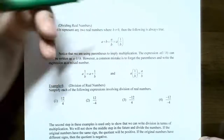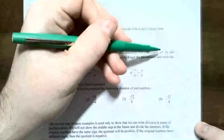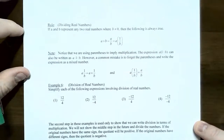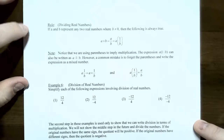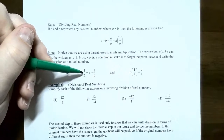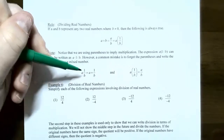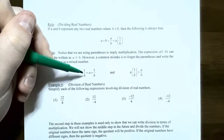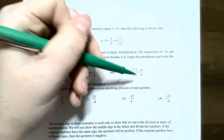One thing to be careful about with notation: when you see A times (1 over B) with parentheses, that's multiplication. But mixed numbers, like 2 and 1 third, are written without parentheses and mean 2 plus 1 third — not 2 times 1 third. If parentheses are placed around the fraction part, that's always multiplication, not a mixed number.